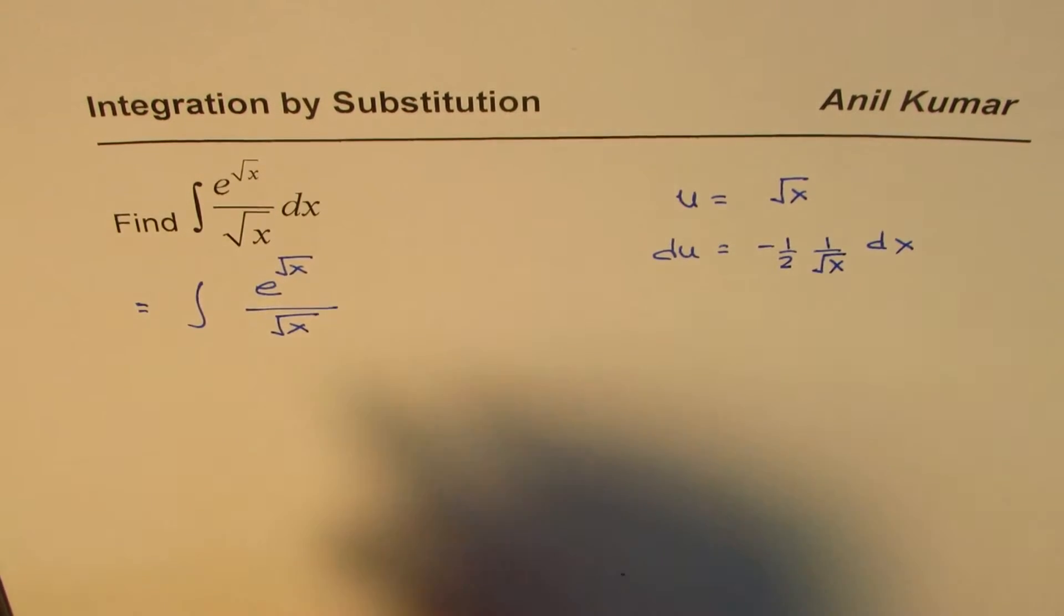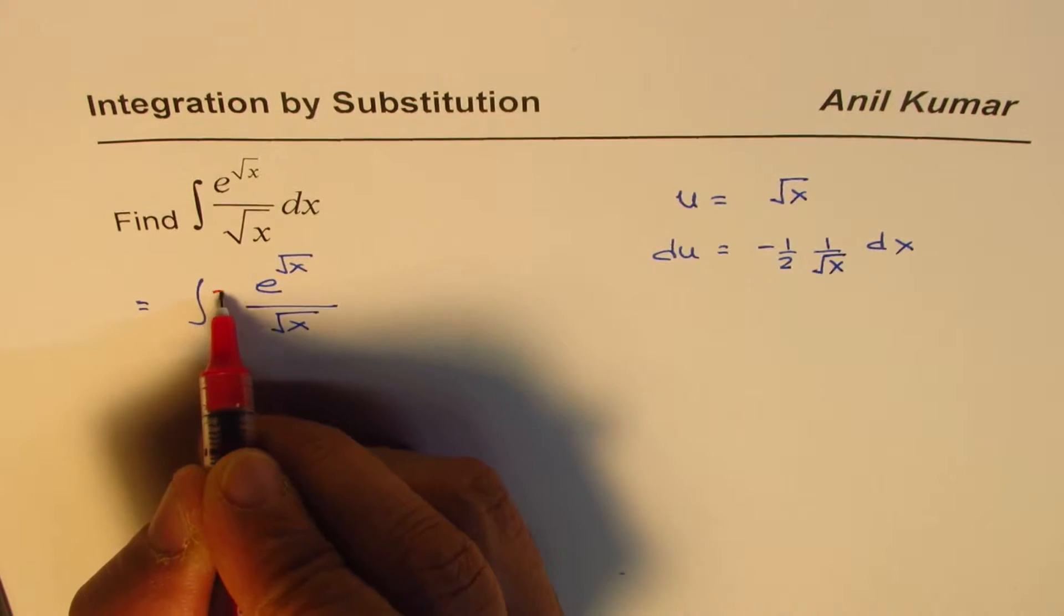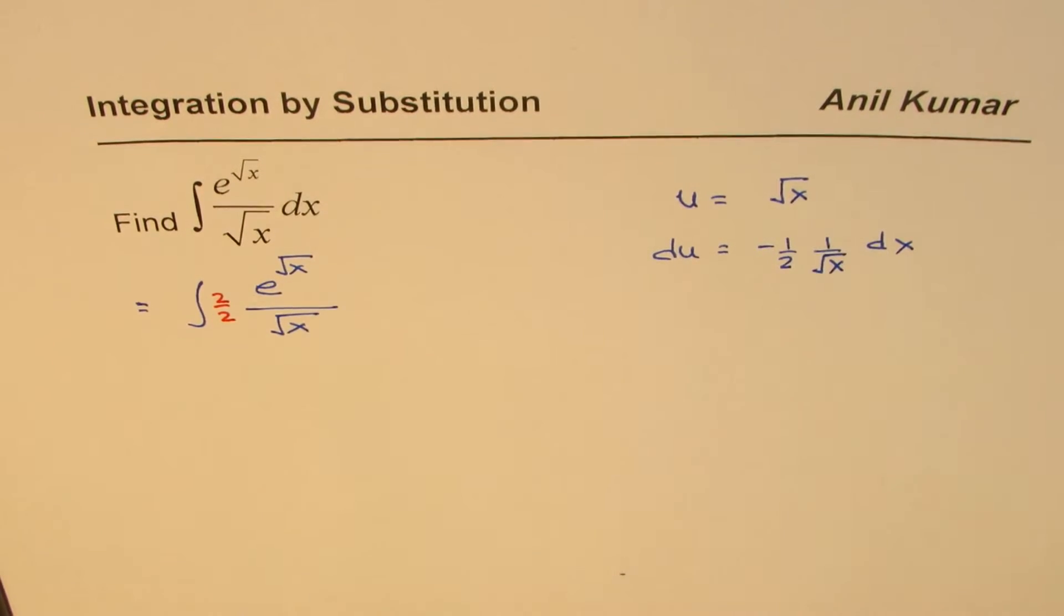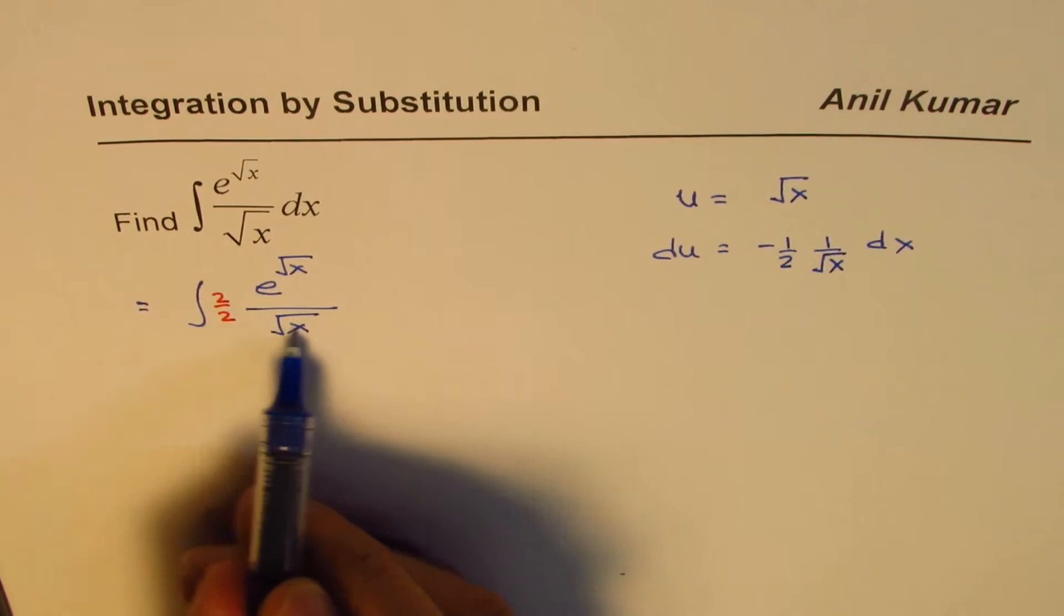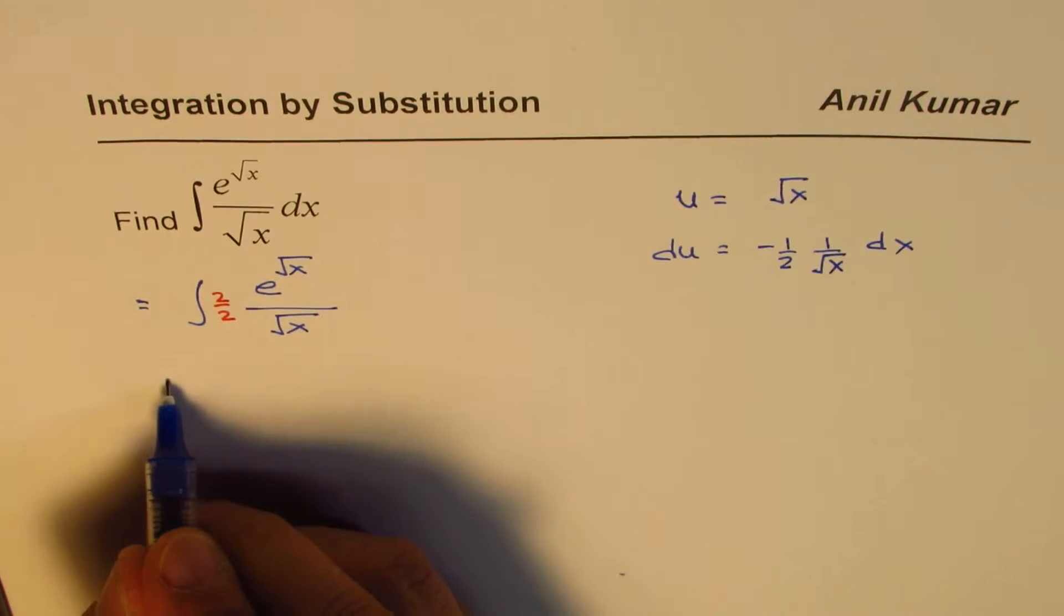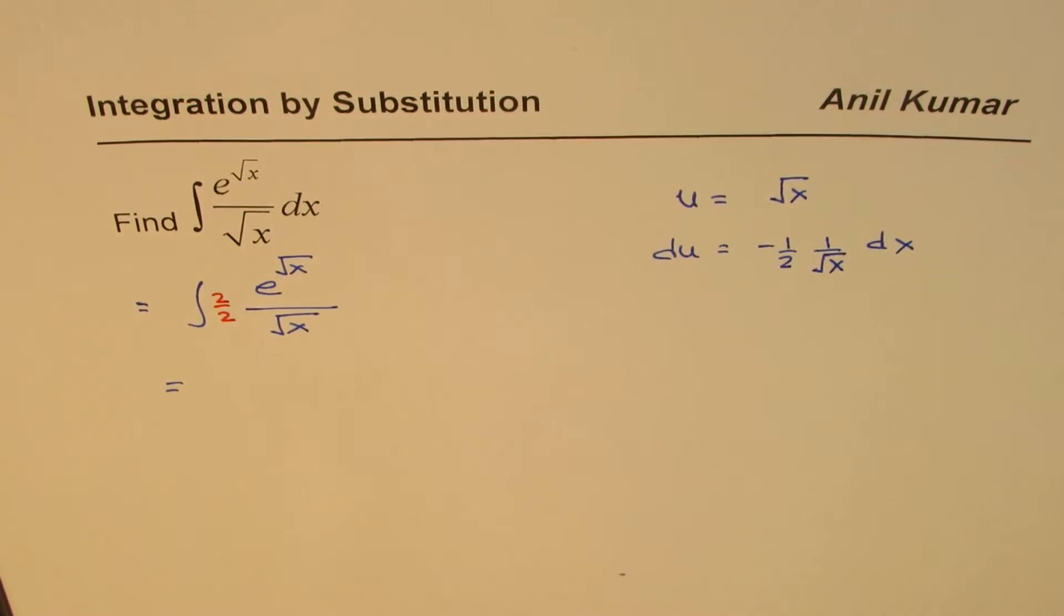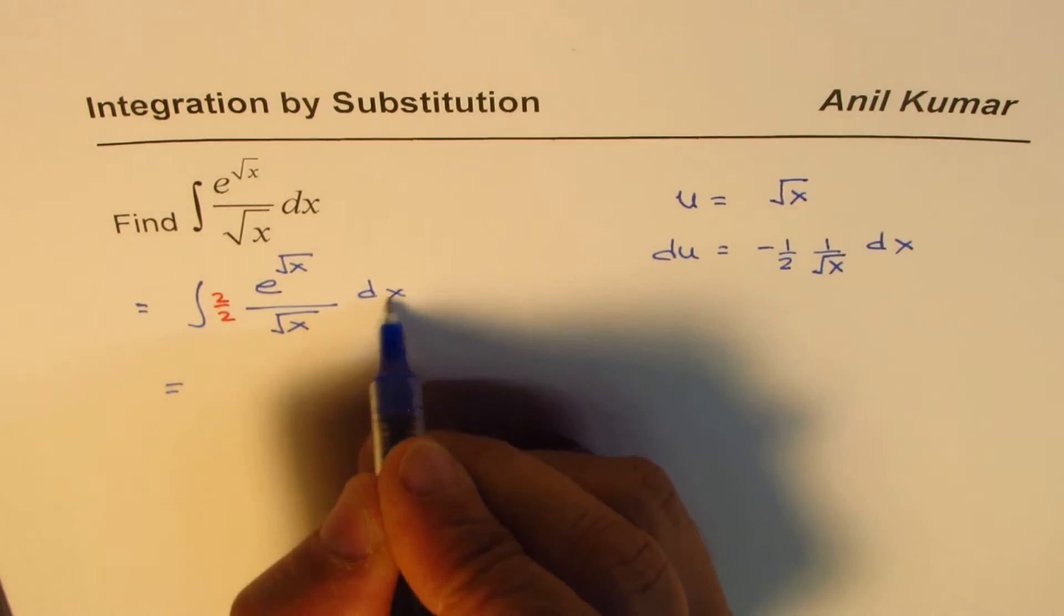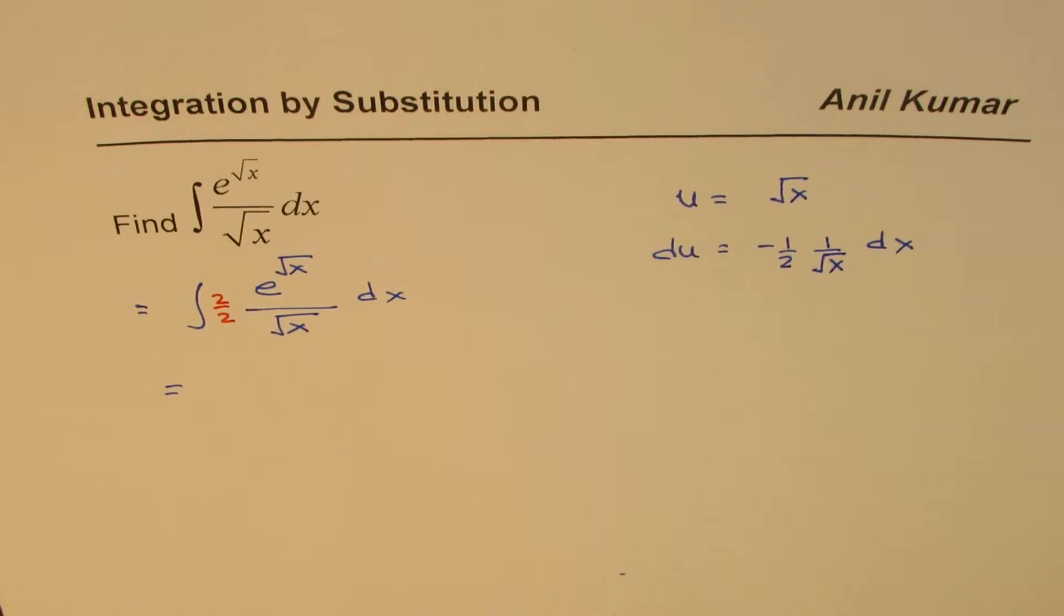We could rewrite this as 2 over 2. When I multiply and divide by 2 over 2, we get this 2 associated with this. So that is how we could think about it. That is the thinking process for us.